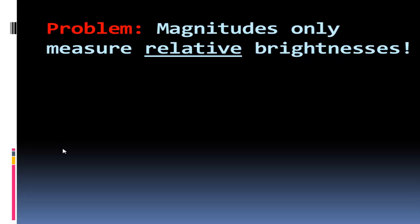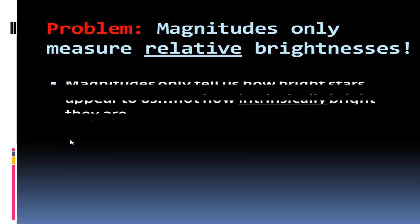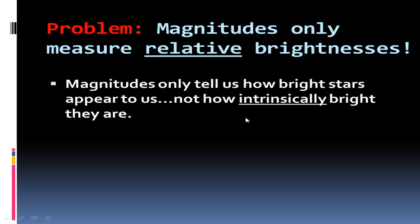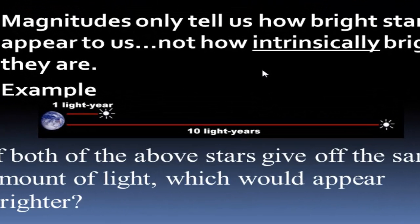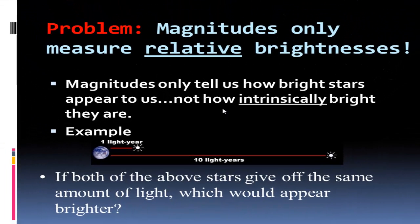We need to take the stars and figure out what their brightness would be at a given distance. Magnitude only tells us how bright stars appear to us, not their intrinsic brightness. Take a look at these two stars - if they're the exact same size and temperature, giving off the same amount of energy, the one really close to us would appear very bright, while the one further away would appear much dimmer.